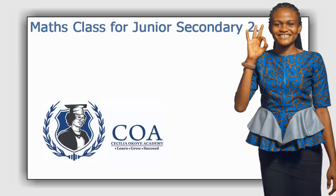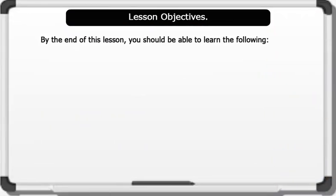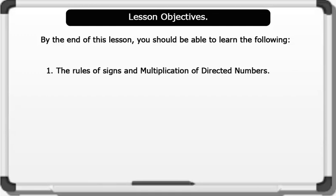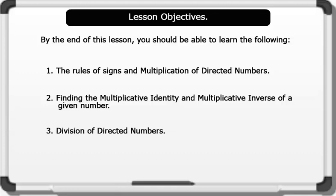Hello. Our topic for today's lesson is Multiplication and Division of Directed Numbers. The lesson duration is 5 minutes. Let's check out the lesson objectives. By the end of this lesson, you should be able to learn the following: 1. The Rules of Signs and Multiplication of Directed Numbers. 2. Finding the Multiplicative Identity and Multiplicative Inverse of a Given Number. 3. Division of Directed Numbers. Please pay attention as we go through the lesson together.